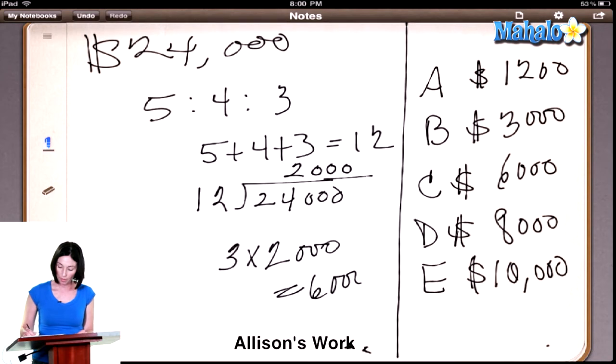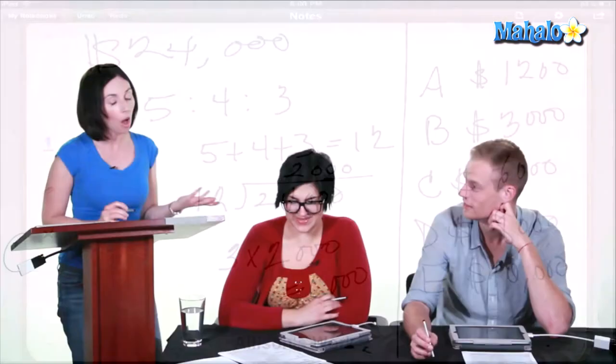I had no idea that was that easy. Yeah, it's really not. All you have to know is that when they give you a ratio like 5 to 4 to 3, those are the parts of the whole. In this case, the whole thing is split into 12 parts. That way you can find out how much one part would be, and if you're entitled to 3 parts you multiply by 3, if you're entitled to 4 parts you multiply by 4.